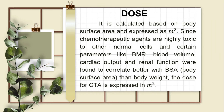Dose. The dose is calculated based on body surface area and expressed as M². Since chemotherapeutic agents are highly toxic to normal cells, certain parameters like VMR, blood volume, cardiac output, and renal function were found to correlate better with BSA (body surface area) than body weight. The dose for CTA is expressed in M².